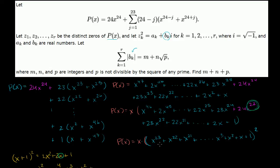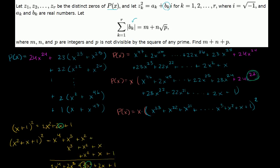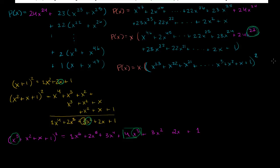But it still doesn't seem like we are any closer to finding the roots, especially the roots that matter. There's another aha moment here: this part in blue, which is really just the sum of all of the degrees of x from x to the 0 all the way to x to the 23, actually is a finite geometric series if you view the common ratio as x.